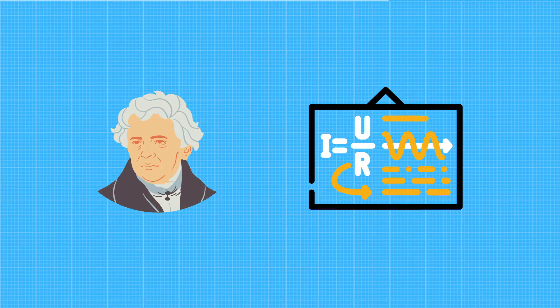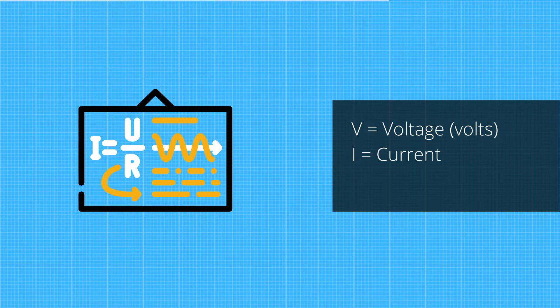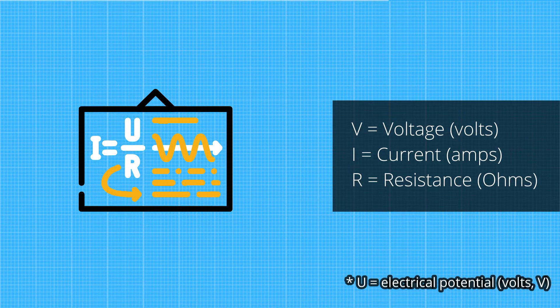Here is the formula established by Georg Simon Ohm. Where V stands for voltage, I stands for current, and R is resistance.